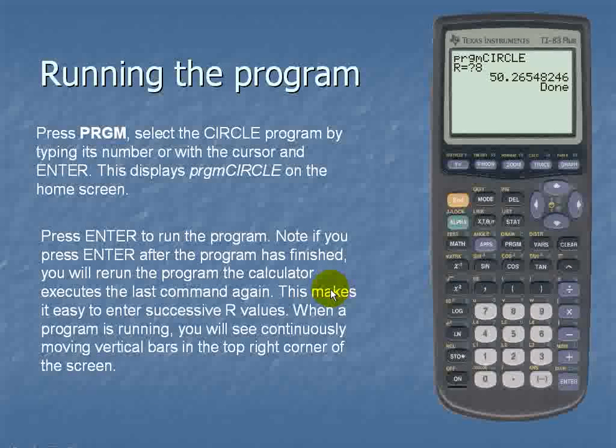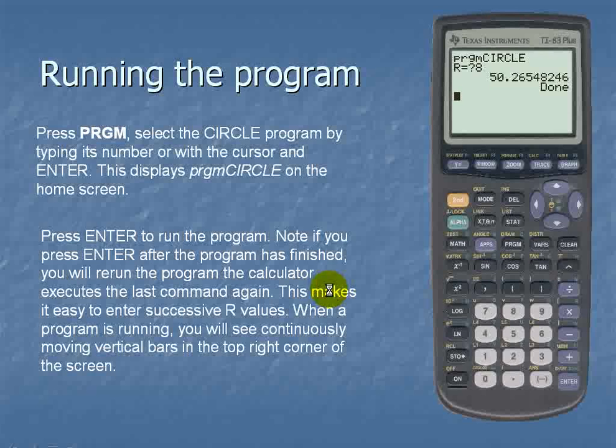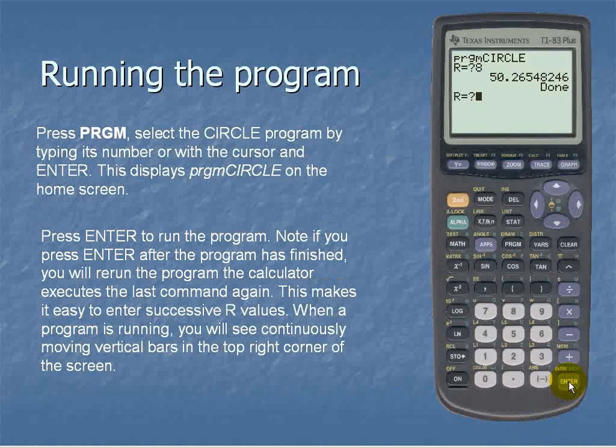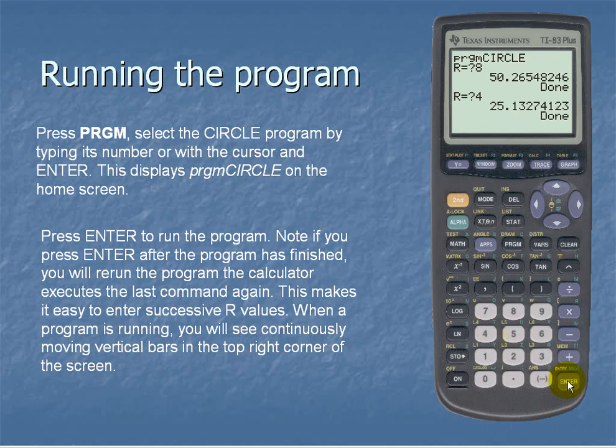So for example if we wanted to enter a different value for our radius we'll simply hit enter. And this time we'll put in a radius of 4. And in order to break the program we'll simply hit clear.